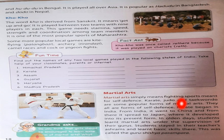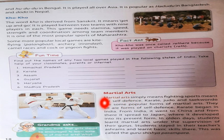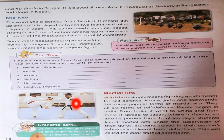Students stayed in their teacher's ashram and learned basic skills there. This was called the Guru Shishya Parampara. From this paragraph, we have seen that martial arts means self-defense. It first started in India, then went to China and then to Japan as it is played today. A long time ago, students used to learn martial arts from their guru, lived in the guru's ashram, and learned basic skills there. This was called the Guru Shishya Parampara.